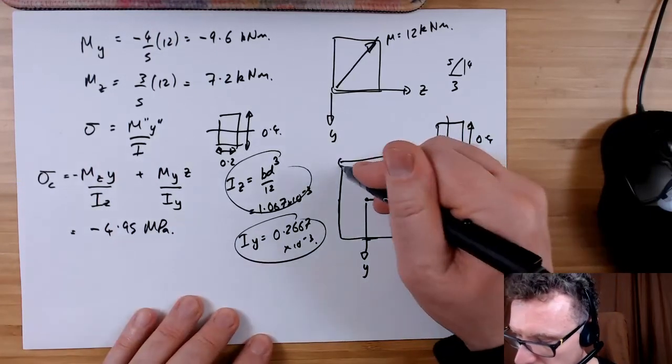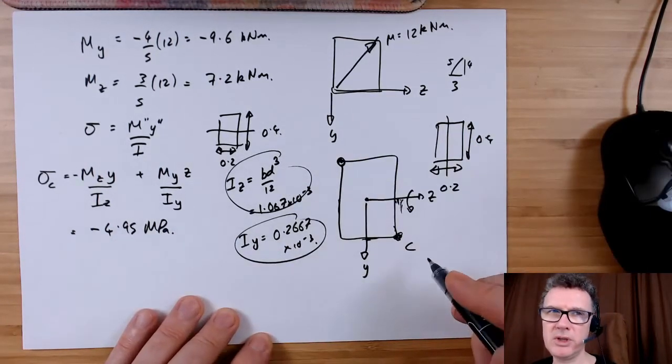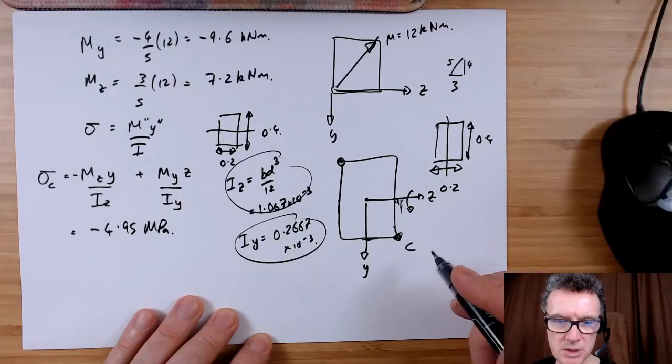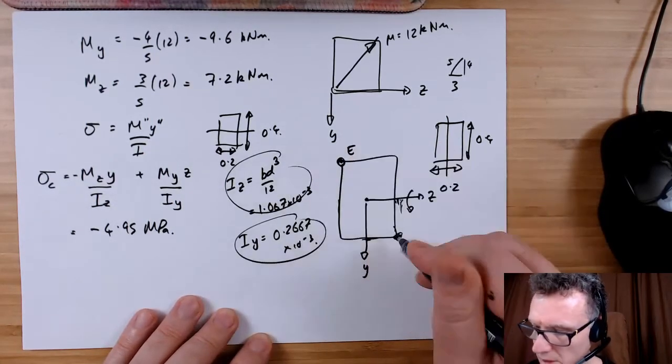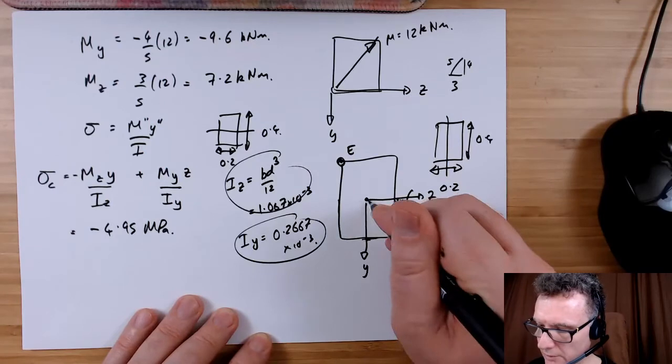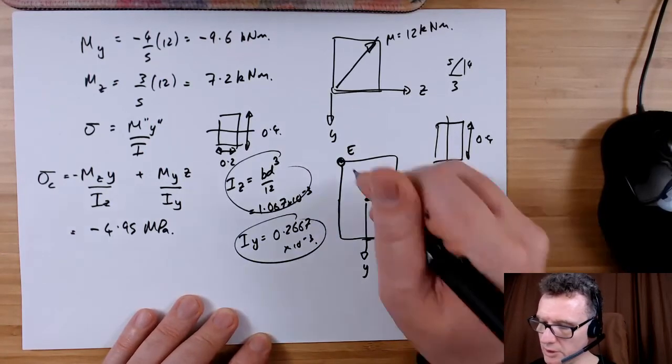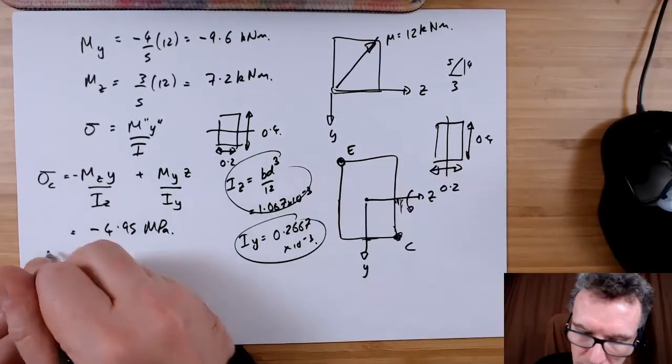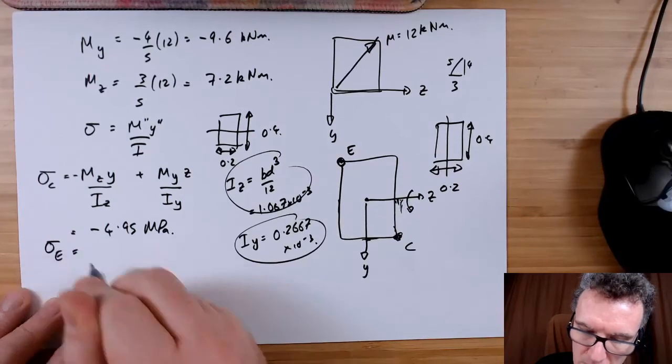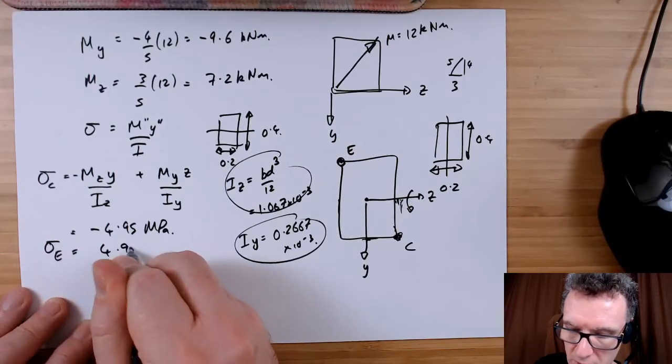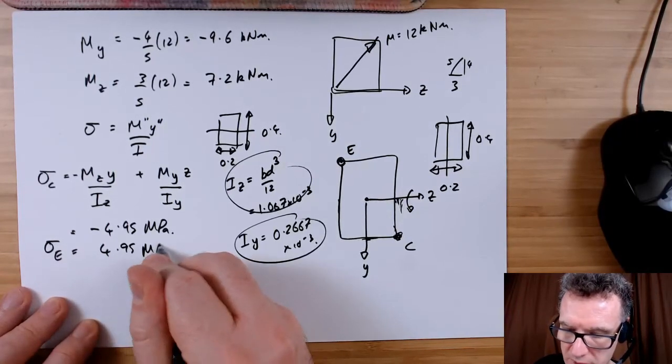To work out the stress at this point here, which is point E, well if everything's getting squashed in this corner, this one's getting stretched, so it's just the opposite number. So 4.95 megapascals.